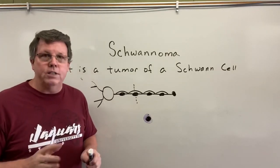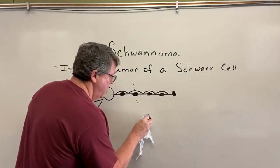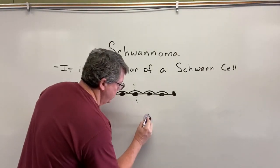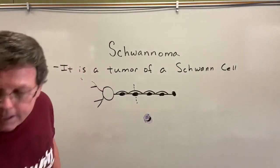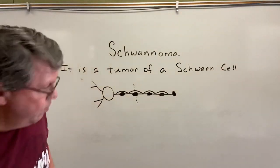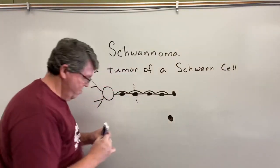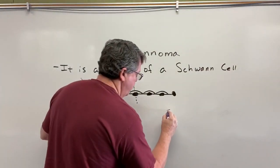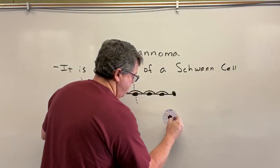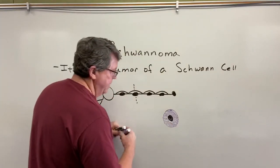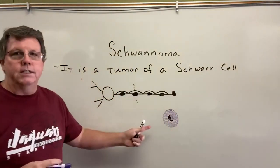Here's the problem that's going to happen in a schwannoma. The schwann cell becomes a tumor and starts growing into the area where the nerve is. If I get a tumor, what's going to happen is it's going to grow into this area and put pressure on the nerve. And now the nerve can no longer function. That's what happens in a schwannoma.